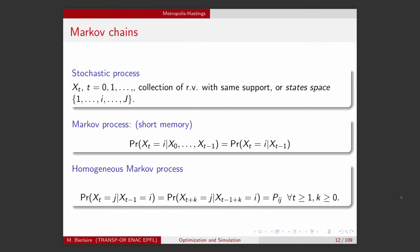We will start from the definition of a stochastic process. A stochastic process is a collection of random variables. They all have the same support, which we will call the state space. Typically we have capital J discrete states, and these random variables are indexed by T, which is time. So it's a process that evolves over time.